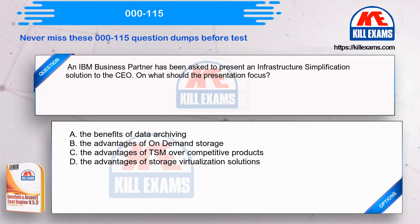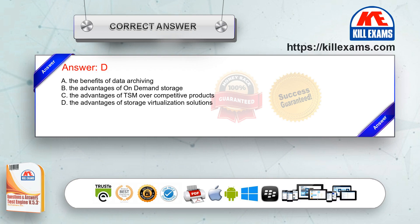An IBM business partner has been asked to present an infrastructure simplification solution to the CEO. On what should the presentation focus? Option A: The benefits of data archiving. Option B: The advantages of on-demand storage. Option C: The advantages of TSM over competitive products. Option D: The advantages of storage virtualization solutions. The correct answer is Option D.